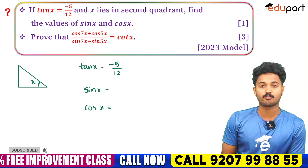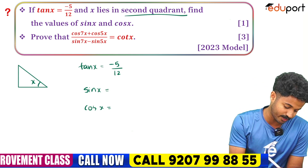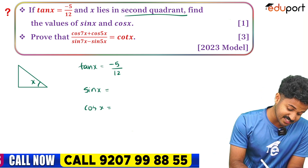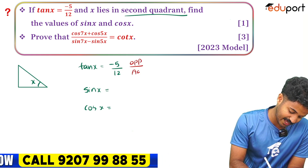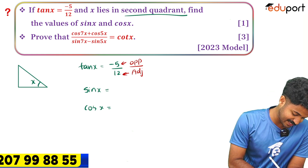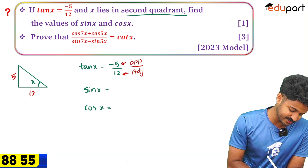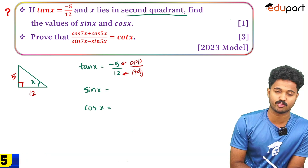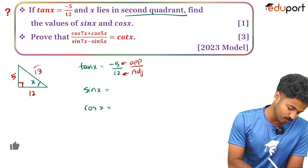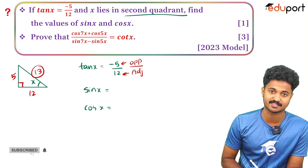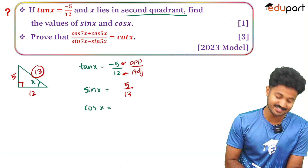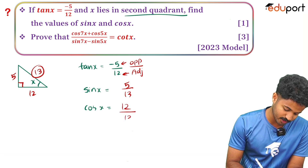If tan x = −5/12 and x lies in the second quadrant, find the values of sin x and cos x. Since tan = opposite/adjacent, opposite = 5, adjacent = 12, so hypotenuse = √(25+144) = 13. Thus sin x = 5/13 and cos x = 12/13.